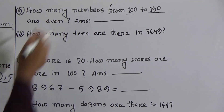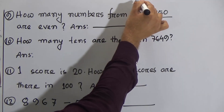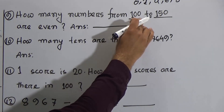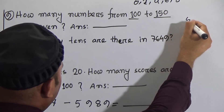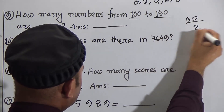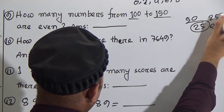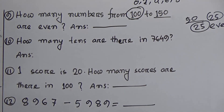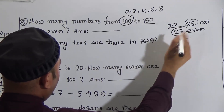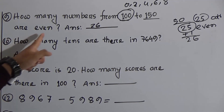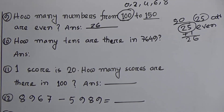Question nine: how many numbers from 100 to 150 are even numbers? We know that if the ones place digit is 0, 2, 4, 6, or 8, it is an even number. From 100 to 150 there are 50 numbers. Even and odd numbers come one by one, so there are 25 even and 25 odd. But 100 is also an even number, so 25 plus 1 equals 26. The answer is 26 even numbers.